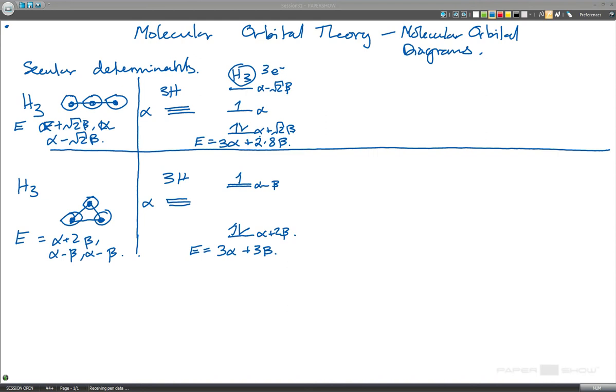So here, a conclusion is, in terms of the energy which is given here and here. If we take an electron away, we make H3 plus, we only have two electrons. Then we fill the levels up as follows. We only have two electrons to put in.